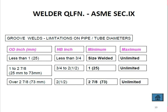Pipe and tube diameter qualification limits: if the OD is less than 25 mm (less than 3/4 inch NB), the minimum size ordered is that OD and the maximum is unlimited. For OD of 25 to 73 mm (3/4 inch to 2 inch NB), the minimum is 25 mm and the maximum is unlimited. For OD over 73 mm (over 2 inch NB), 73 mm is the minimum and the maximum is unlimited. This chart must be remembered for welder qualification.